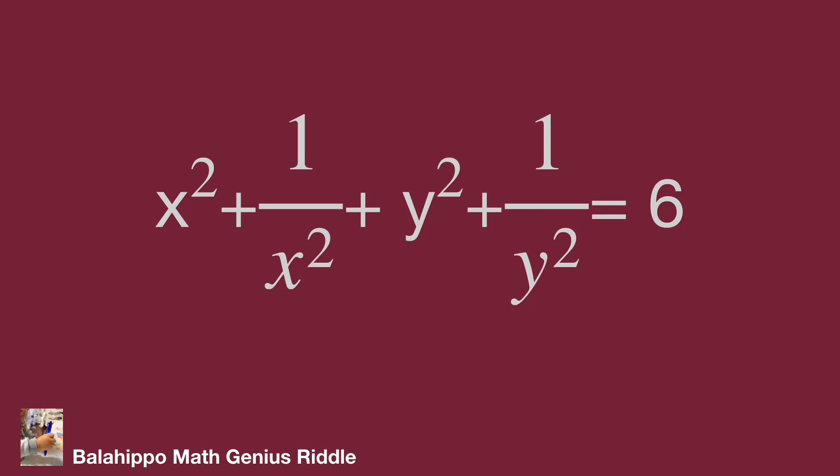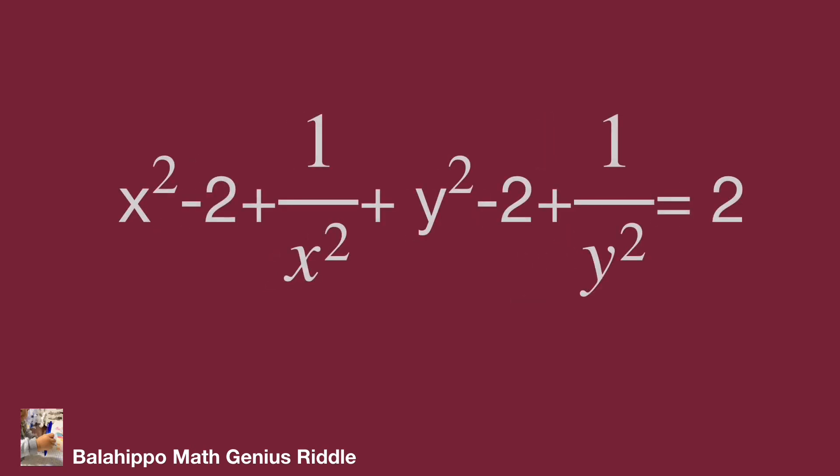Then we can factor x squared in each group. So insert minus 2 into each group. Then 6 on the right side of the equation becomes 2.